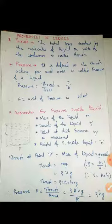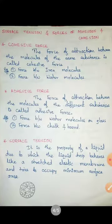Acceleration due to gravity G is constant. Rho is density — so as the density of the liquid increases, pressure inside that liquid also increases. And if the height H in the liquid increases, pressure also increases. That is the reason when we go to higher depths, pressure inside a liquid increases.